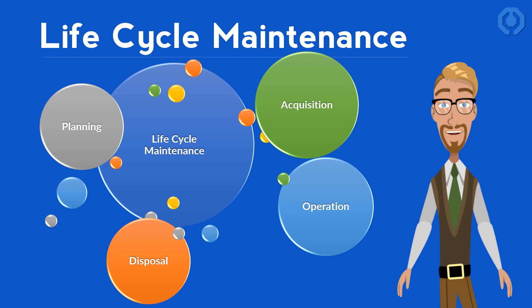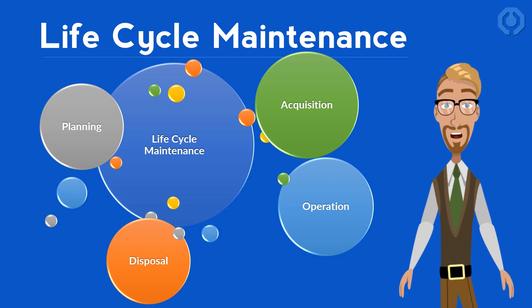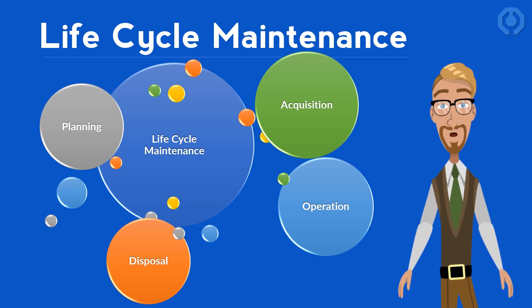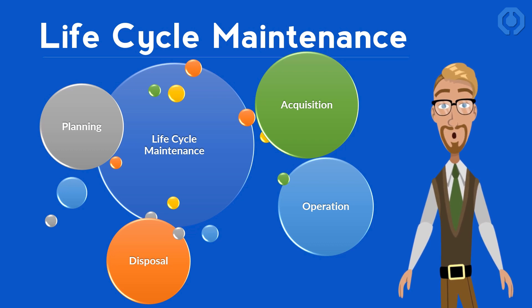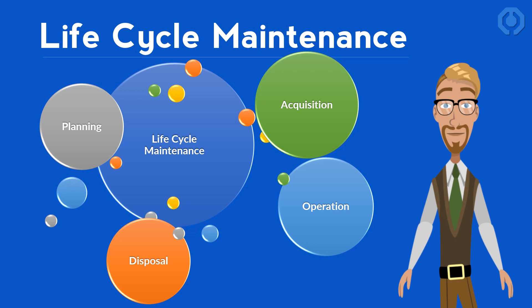The last step of a successful design process is planning a life cycle maintenance. Life cycle maintenance is a collection of methods and standards for improving maintenance, supporting and management processes throughout the life cycle of a product. This last stage of designing is a long-term task. The four key stages of the product life cycle maintenance are Planning, Acquisition, Operation, and Disposal. These stages are essential to improve the potential services of a product and minimize the costs and involved risks.